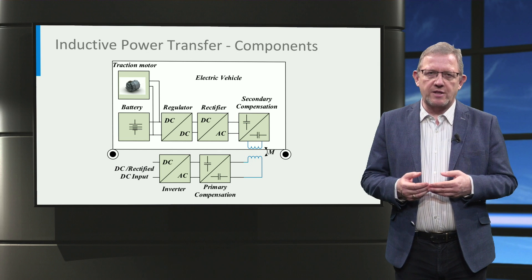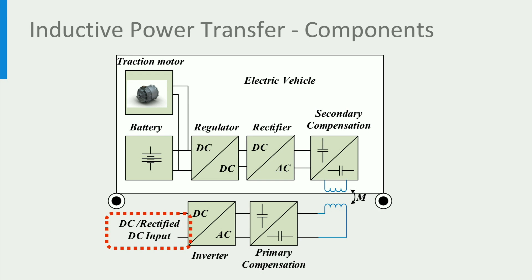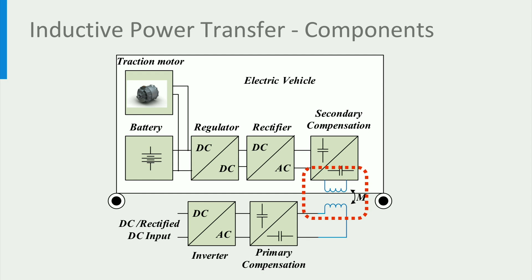Let us now look at the key parts of an IPT system and understand how it works. In the first step, the IPT system takes power from the 50 Hz AC mains, which can be single phase or three phase, and is rectified to DC using a DC-to-DC converter. Alternatively, power directly from a DC source can be used as well. This DC input is then converted to high-frequency AC power using a DC-AC inverter. The standard for electric vehicle charging earmarks a small band between 80 to 90 kHz for wireless charging of electric vehicles, with a central frequency of 85 kHz. The inverter produces this 85 kHz pulse-width modulated or PWM voltage, which is fed to a wireless charging pad.